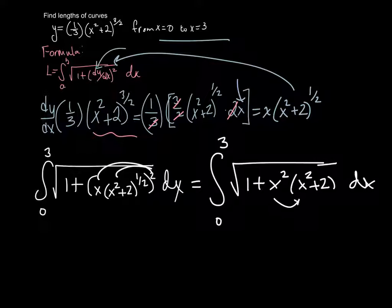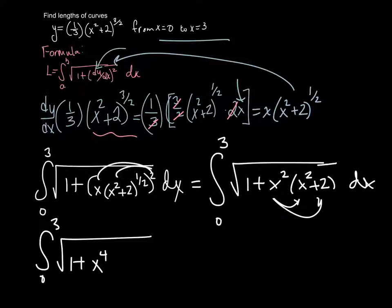And now from here, I'm going to go ahead and distribute that x squared. So 0 to 3 square root of 1 plus x to the 4th plus 2x squared dx.